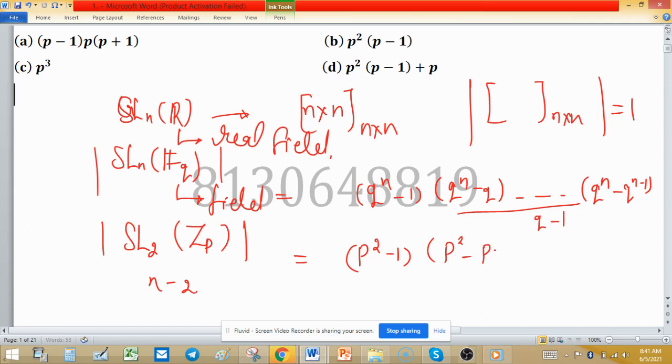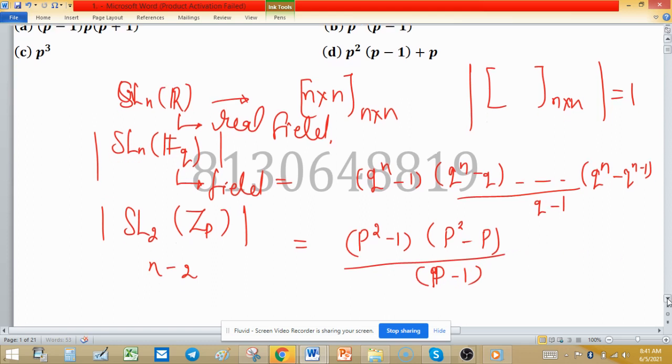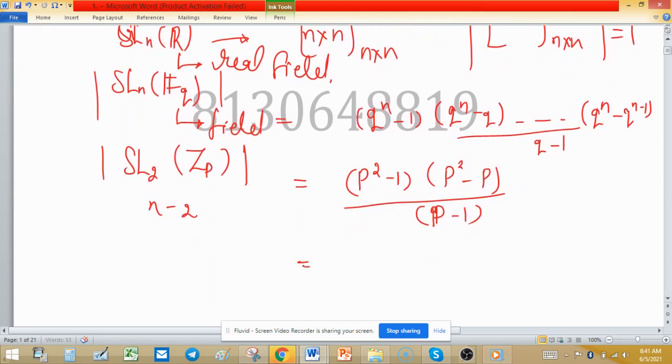So we have p^(2-1) and so on, up to p^2 minus p, divided by p minus 1. Now simplify this expression: we have p^2 minus 1, which is the formula a^2 minus b^2, so (p+1)(p-1). This is (p+1) times (p-1).